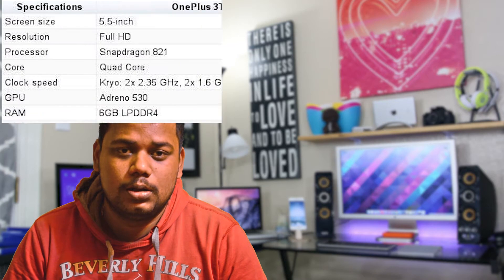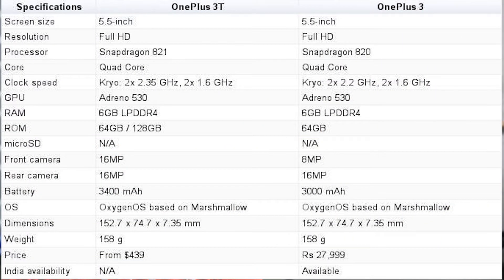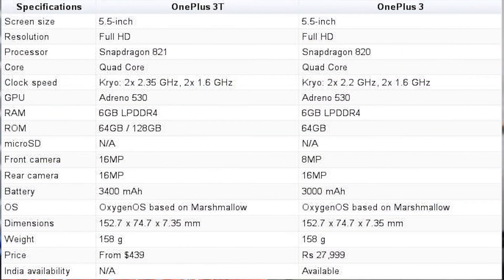In this video I am going to compare OnePlus 3T specs to OnePlus 3, specifically what has changed. The first thing that changed is the chipset. OnePlus 3T has got the Snapdragon 821 chipset clocked at 2.4 GHz, compared to OnePlus 3 which has the Snapdragon 820 chipset clocked at 2.2 GHz.